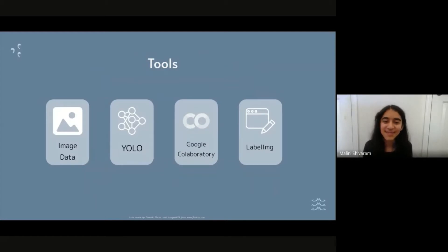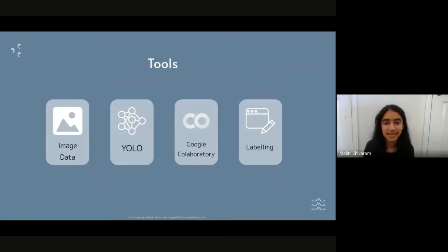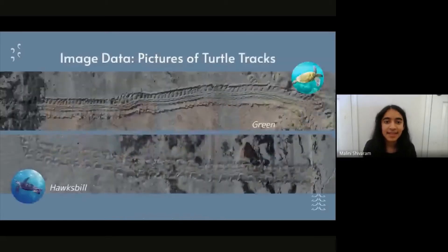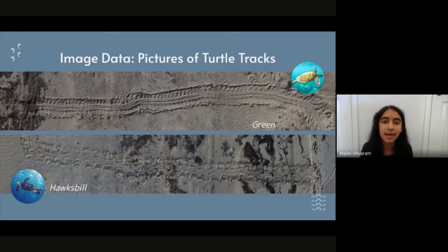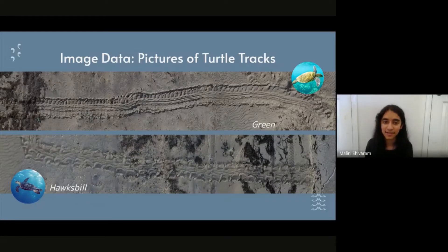Here are the tools I've been using throughout this project: image data, YOLO, Google Colab, and LabelIMG. Starting with image data — basically pictures of turtle tracks. We received many images of turtle tracks from Mexico to use as data for the project. On the top you can see an example of green turtle tracks, and on the bottom is an example of tracks made by hawksbill turtles. These tracks of the two species are quite distinct, but sometimes they can be hard to tell apart.